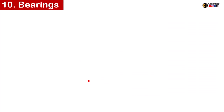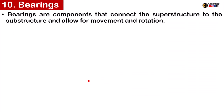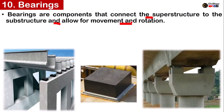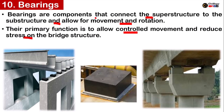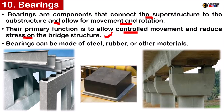On number ten, we have Bearings. Bearings are components that connect the superstructure to the substructure and allow for movement and rotation. You may have seen these black blocks under bridges — these are bearing pads. Their primary function is to allow controlled movement and reduce stresses on the bridge structure. Bearings can be made of steel, rubber, or other materials.